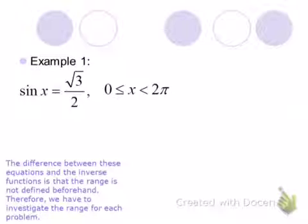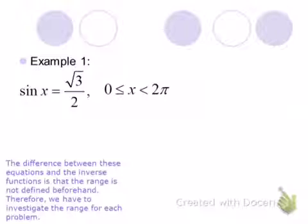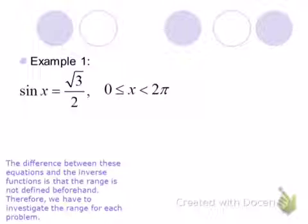First example. What makes this a trig equation? It has a trig function in it — sine is a trig function. Sine of x is the square root of 3 over 2. What makes this a trig equation is the fact that we're looking for an unknown value. So anytime we're looking for an unknown value, we're going to solve.